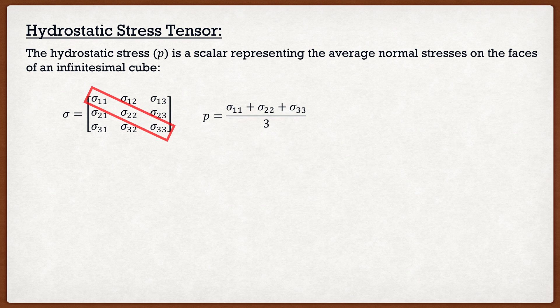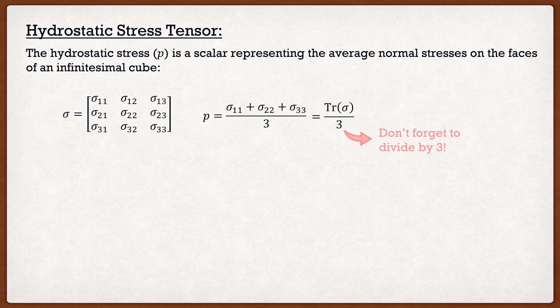If you're adding up all the diagonal components, that's actually just the trace of the Cauchy stress tensor — and that's completely correct. So the hydrostatic stress can be taken as the trace of the Cauchy stress tensor divided by three. People often get so caught up with taking the trace that they forget to divide by three, so when you're doing your calculations, make sure you divide by three after taking the trace.